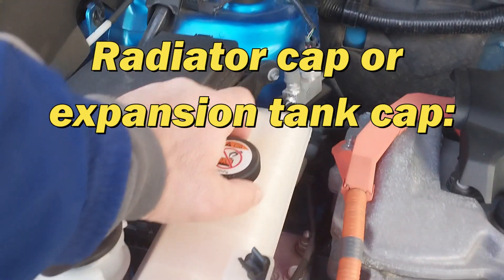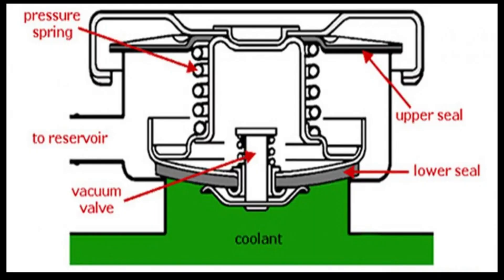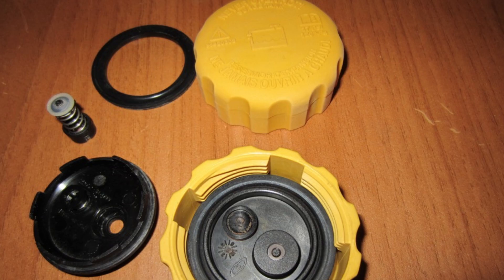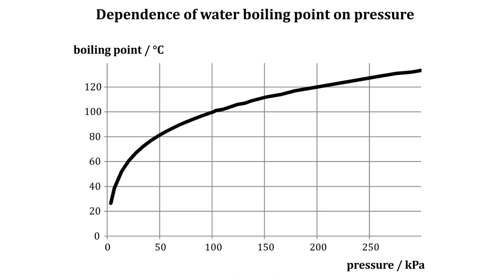Radiator cap or expansion tank cap: In modern cars, a valve is installed in the cover. The valve regulates the pressure in the cooling system and maintains high pressure so that the coolant does not boil at a low temperature. The lower the pressure, the lower the boiling point of the coolant; the higher the pressure, the higher the boiling point.